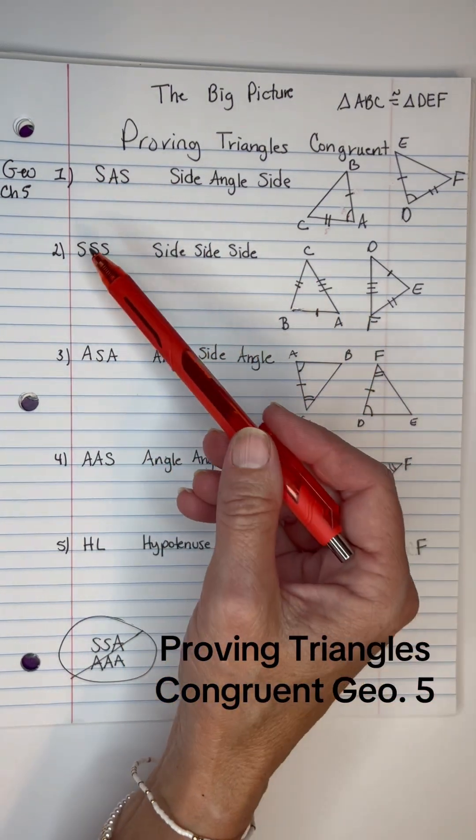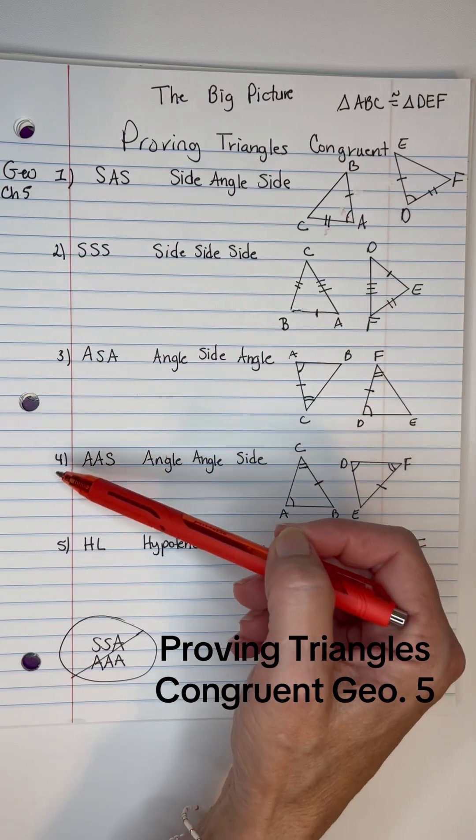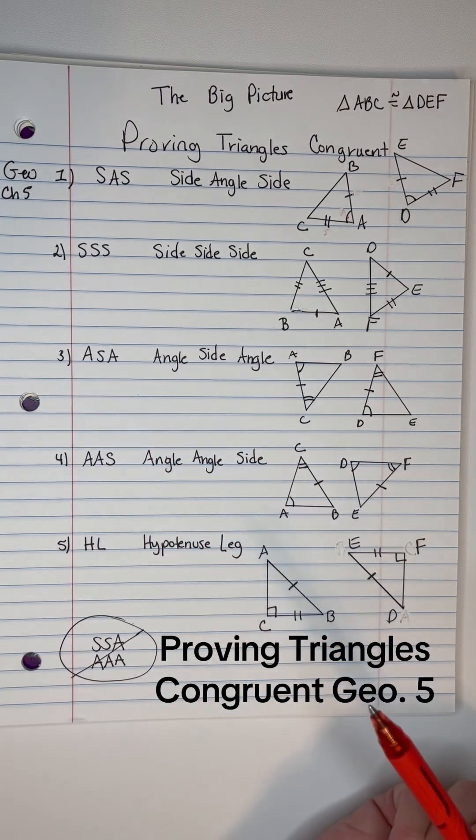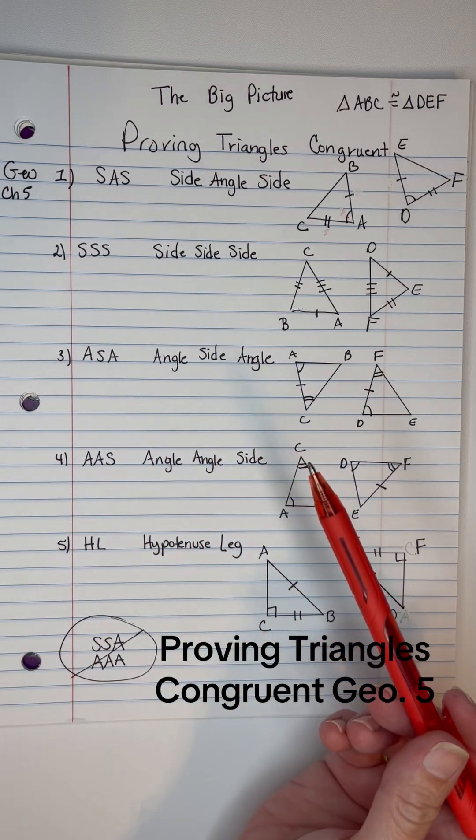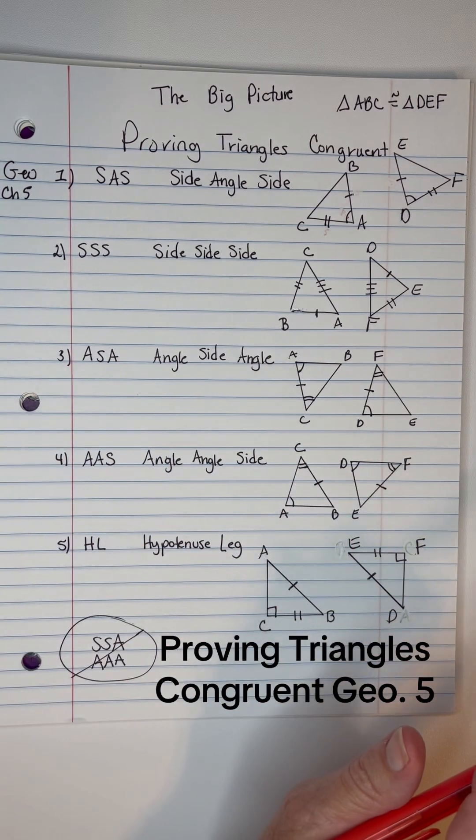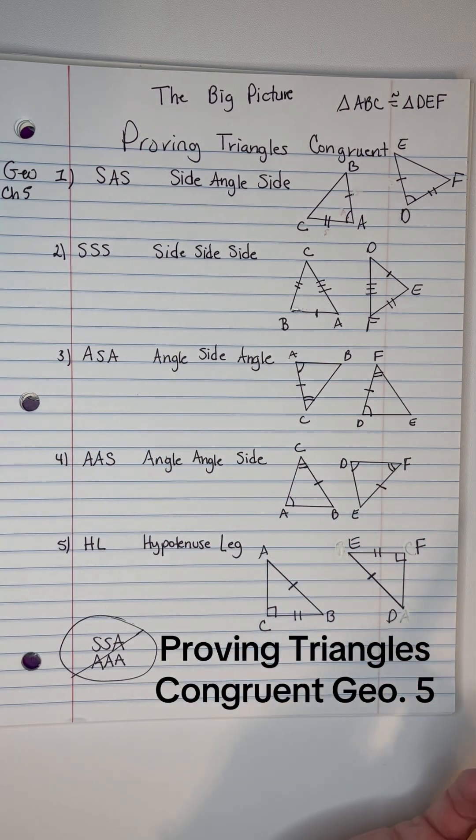You can use side-angle-side, side-side-side, angle-side-angle, angle-angle-side, and hypotenuse-leg. In the Big Ideas book, all of it is separated into different sections. I kind of want you to see the big picture.